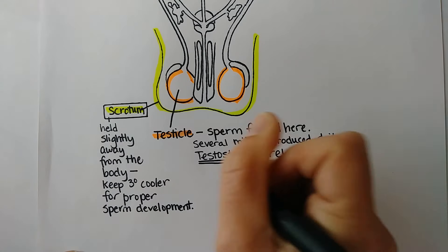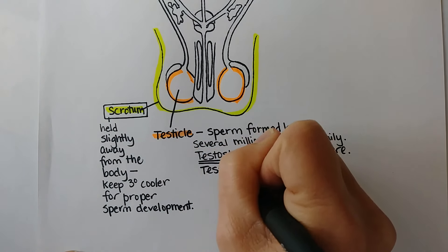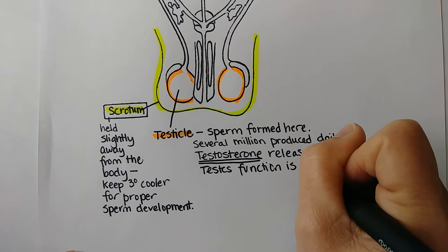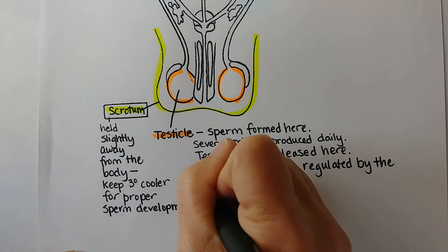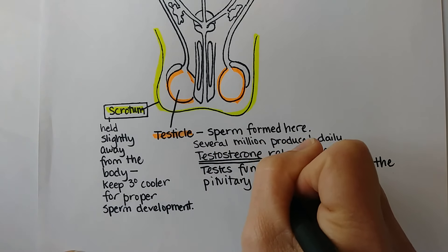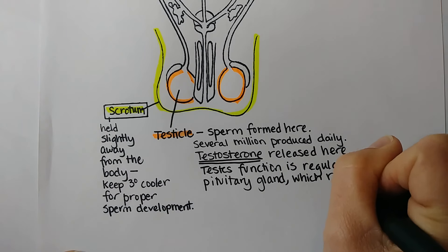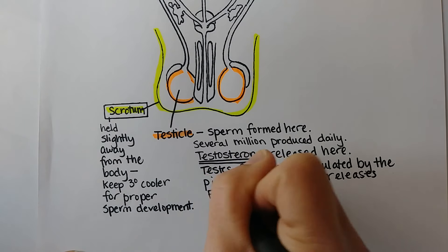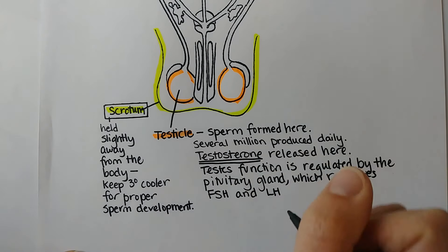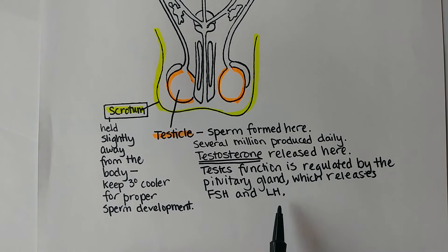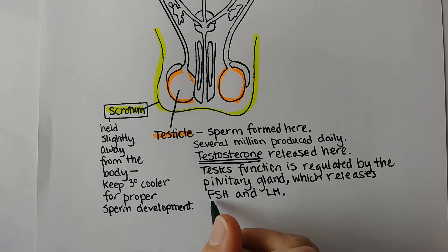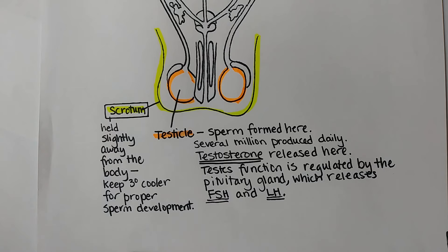Testosterone is released in the testes, and the testes' function is regulated by the pituitary gland, which is up in the brain. The pituitary gland releases two hormones: FSH, follicle stimulating hormone, and LH, luteinizing hormone. These two hormones regulate the release and activity of testosterone in the testes. The same pattern is seen with females — FSH and LH regulate the ovaries, and the ovaries produce estrogen as eggs mature.